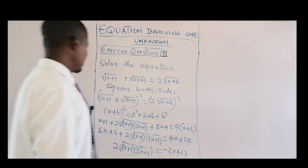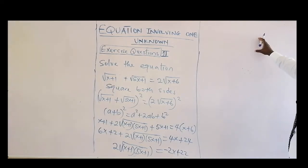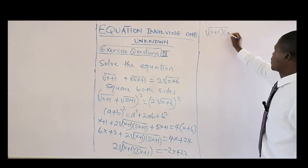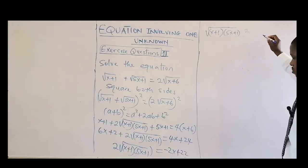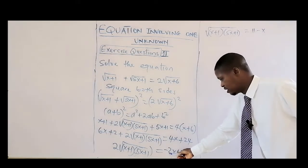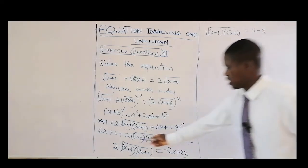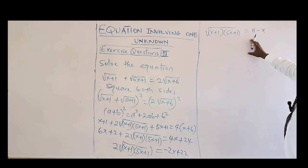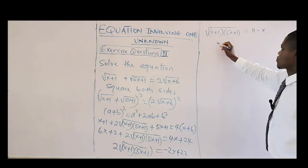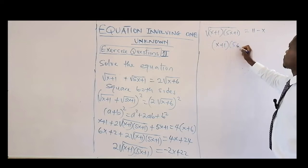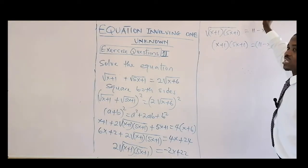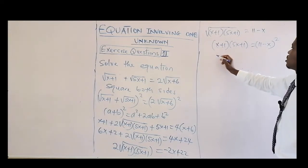We divide through by two, giving √((x+1)(5x+1)) equals 11 minus x. Now we square both sides again to eliminate the remaining square root. The left side becomes (x+1)(5x+1) and the right side becomes (11 - x)² = 121 minus 22x plus x squared.